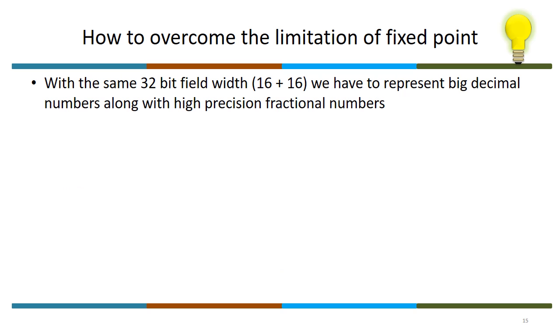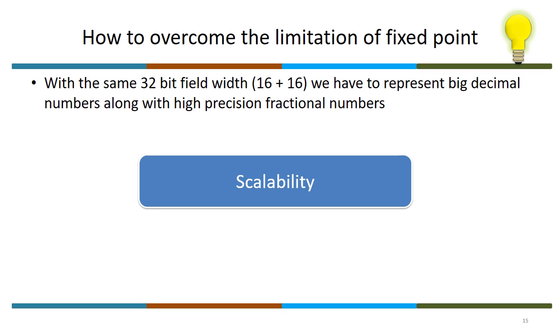How to overcome these limitations? We want to scale. With the same 32-bit field width, can we represent a big decimal number and with high precision fractional numbers? This is a beautiful problem with an amazing solution. The principle of that solution is scalability. How do we achieve scalability in the representation of real numbers? We will see this in our next session on the IEEE 754 floating-point representation. Till then, take care, bye.